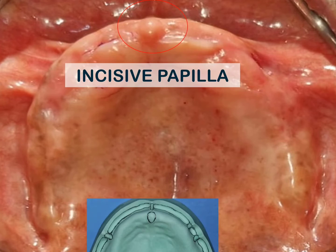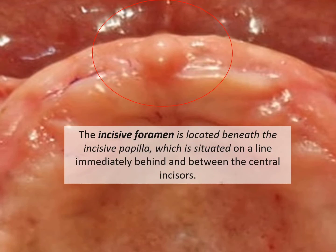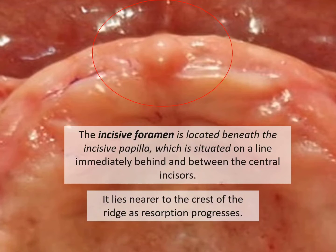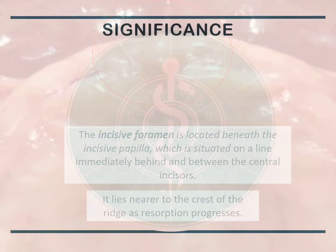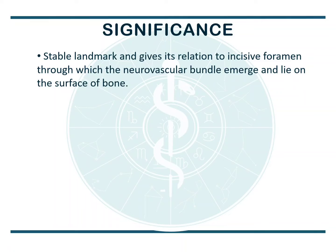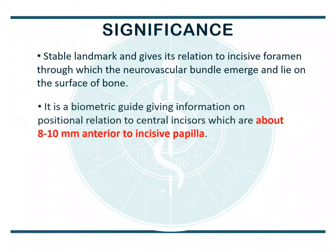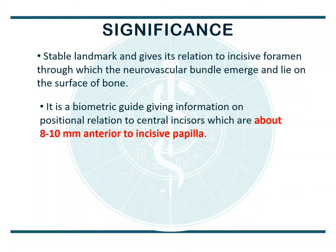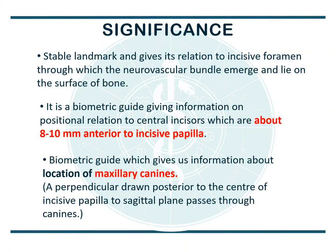The incisive papilla overlies the incisive foramen, which is situated on a line immediately behind and between the central incisors. It lies nearer to the crest of the ridge as resorption progresses, giving us an idea about the amount of resorption. It acts as a stable landmark related to the incisive foramen, through which the neurovascular bundle emerges and lies on the surface of bone. It is a biometric guide: the central incisors are about 8 to 10 mm anterior to the incisive papilla. It also gives information about the location of the maxillary canines — a perpendicular drawn posterior to the center of the incisive papilla to the sagittal plane passes through the canines.